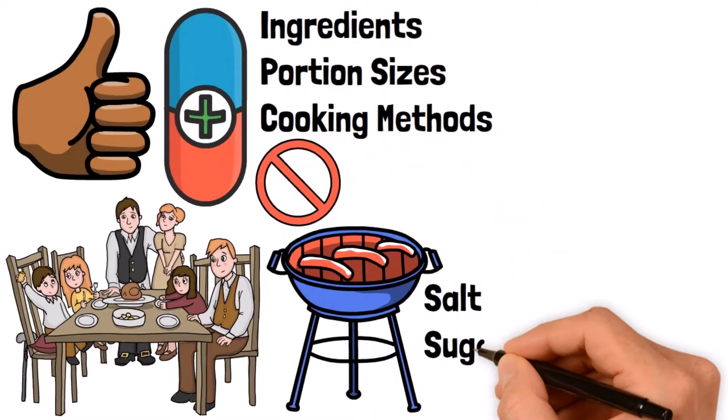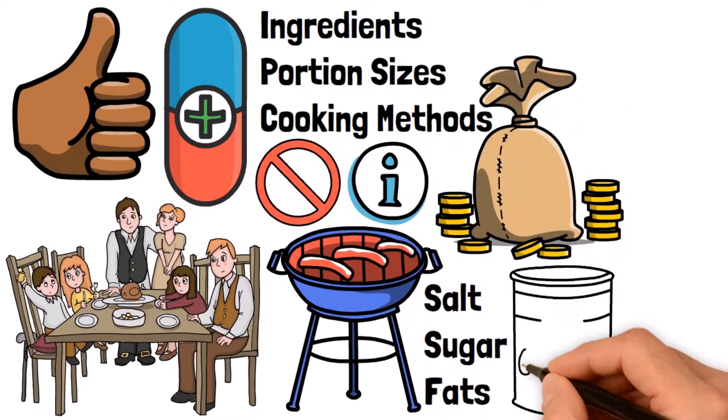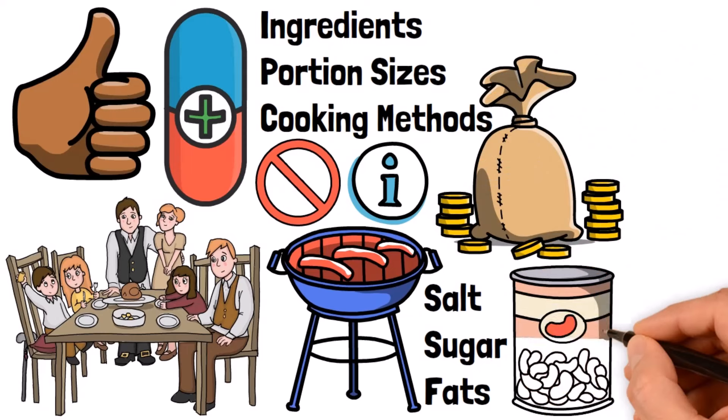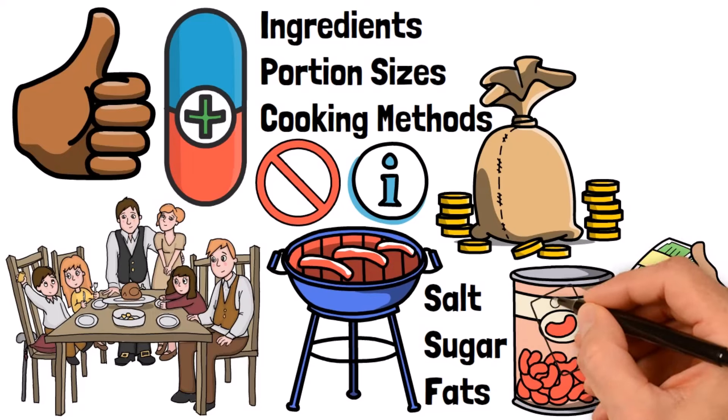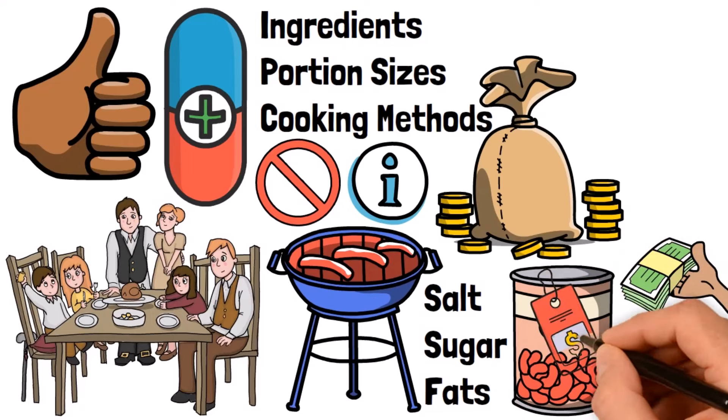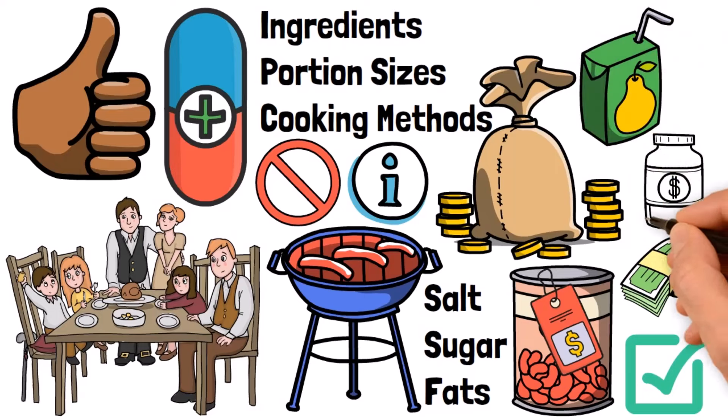Furthermore, here are a few additional tips to making eating at home more enjoyable and financially beneficial. First, try to incorporate seasonal and locally sourced ingredients. They're often fresher and more affordable. Second, consider buying in bulk or taking advantage of sales and discounts. And finally, remember to pack leftovers for lunch, reducing food waste and saving money on workday meals.